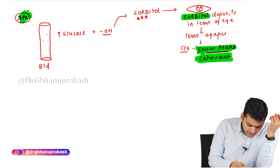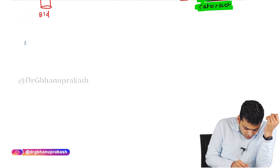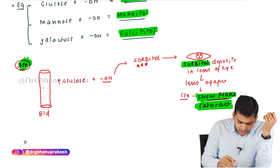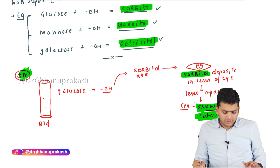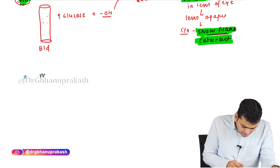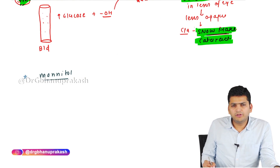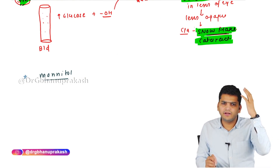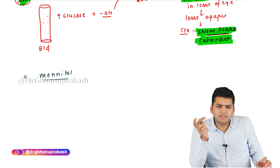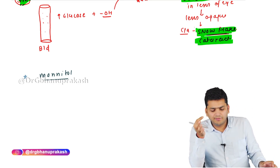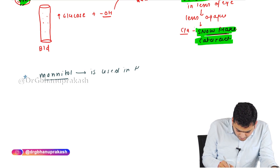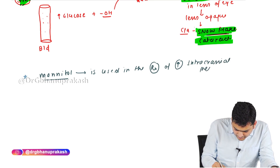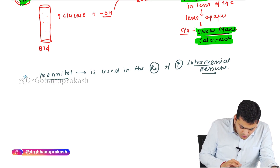The second clinical correlation is mannitol. Mannitol is a pharmacological agent used in the treatment of raised intracranial pressure (ICP/ICT). Whenever there is increased intracranial pressure, we use mannitol to decrease it.